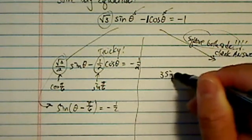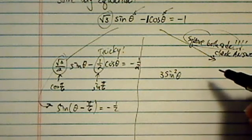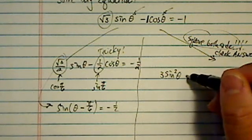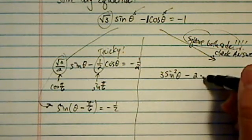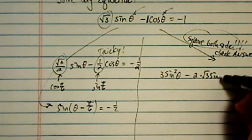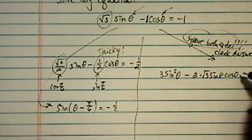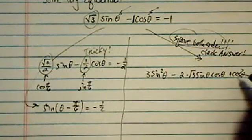When I square both sides, I'll have 3sin²θ - 2√3sinθcosθ + cos²θ. Uh-oh, I'm running out of room. It's equal to 1.